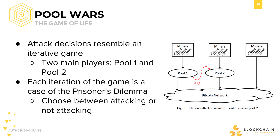There are several different mining pools in the Bitcoin network, but let's focus on two theoretical pools: Pool 1 and Pool 2. Each round, or each iteration, is the case of the prisoner's dilemma. The prisoner's dilemma refers to a problem of cooperation. Pool 1 and Pool 2 both want to attack each other to increase their own personal profit at the expense of others.